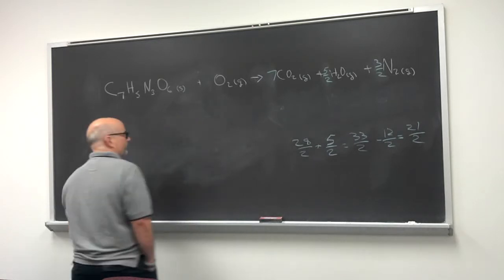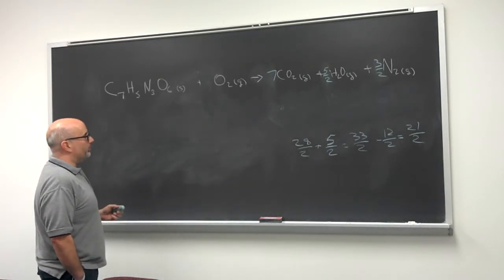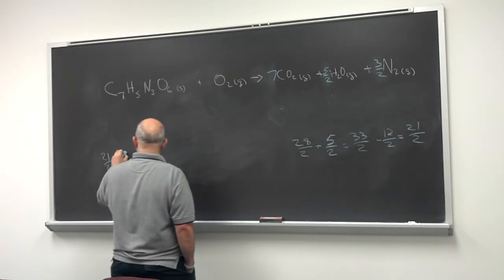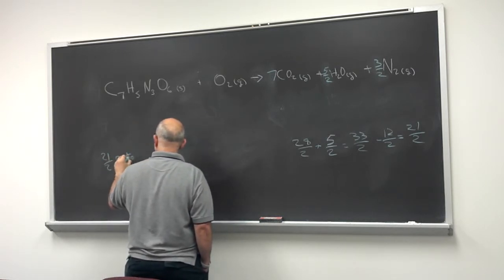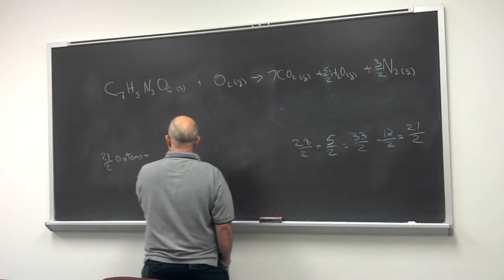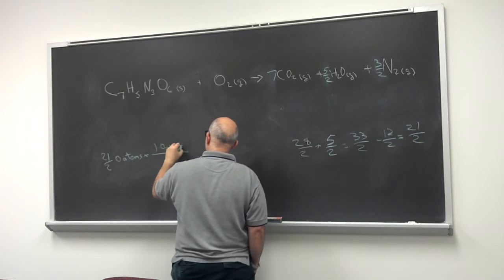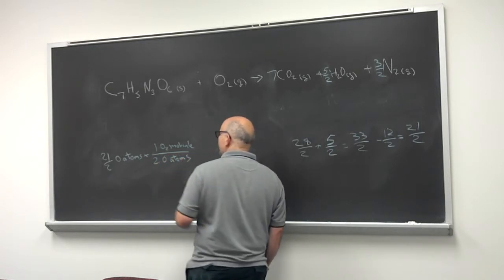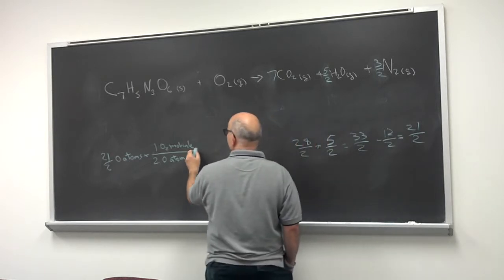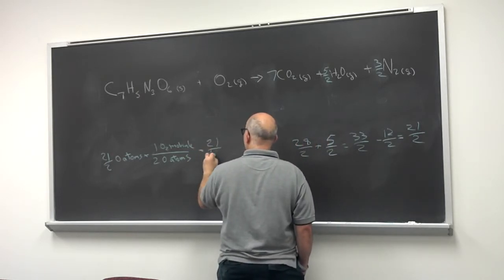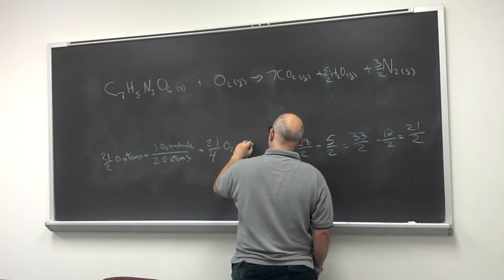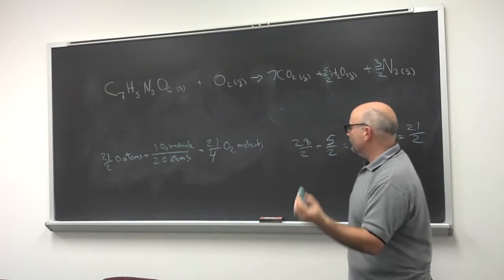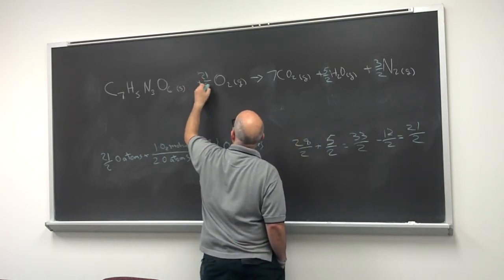Now, how many oxygen molecules do we need for that? Well, you can use dimensional analysis if it doesn't come to you right away. We need 21 halves of oxygen atoms. Each oxygen molecule supplies 2 oxygen atoms. And since we're using fractional coefficients at this point anyway, let's just write that as it is: 21 over 4.